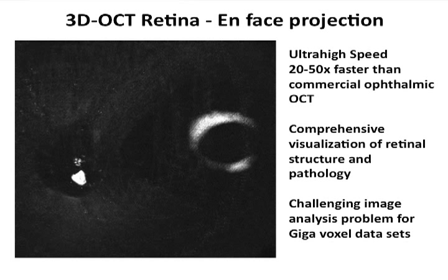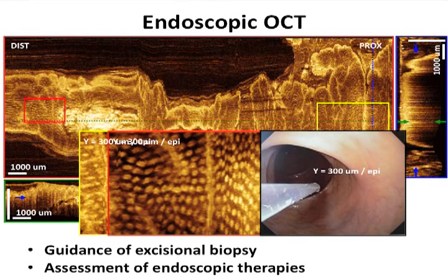Choroidal vascularization deep in the choroid, and then sectioning all the way down into the optic nerve head here. So this type of image has comprehensive information on structure and pathology, and one of the challenging problems for the future is to have methods that will do an automated assessment of quantitative properties in the image.